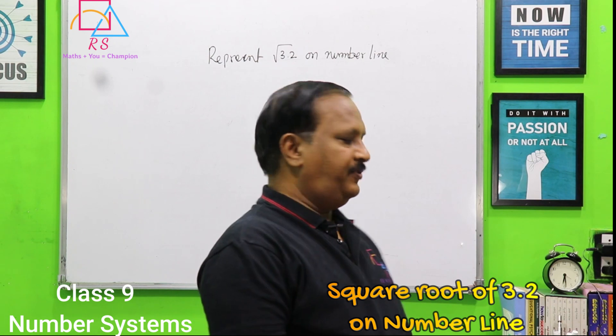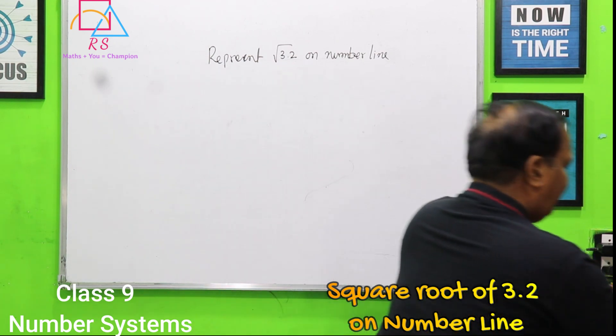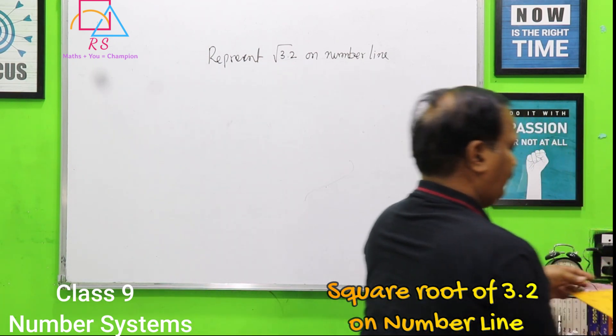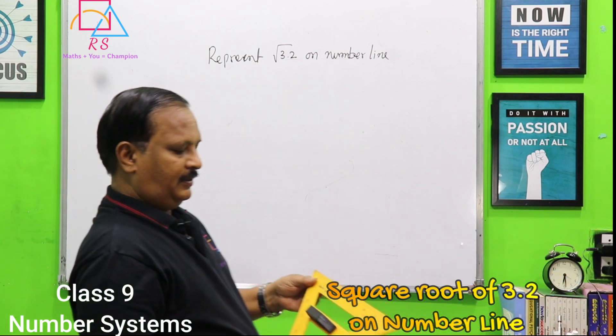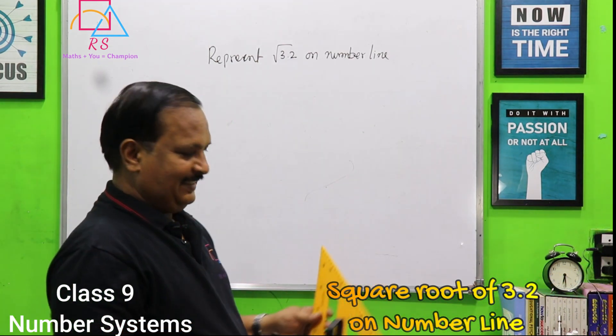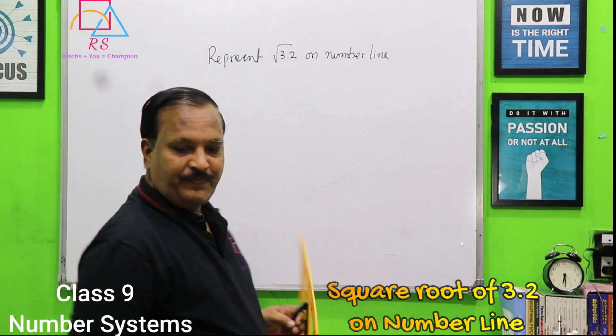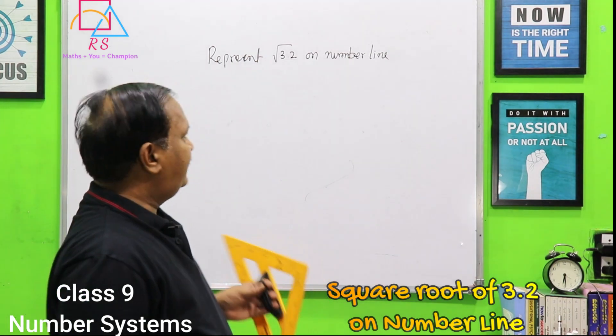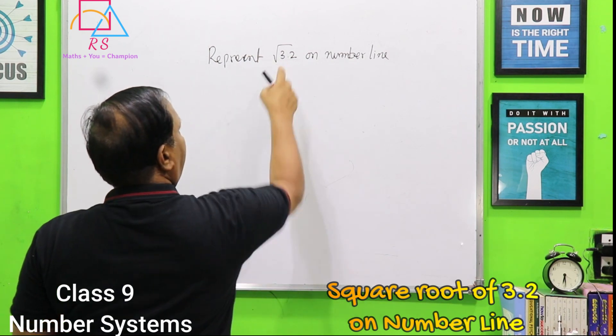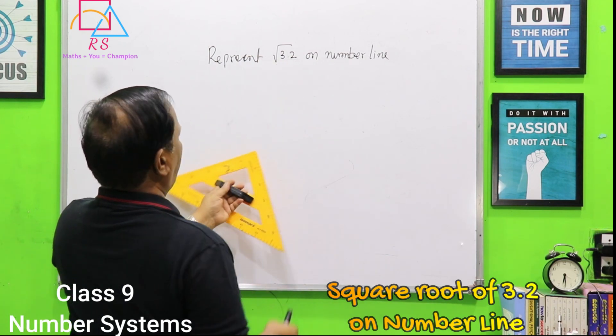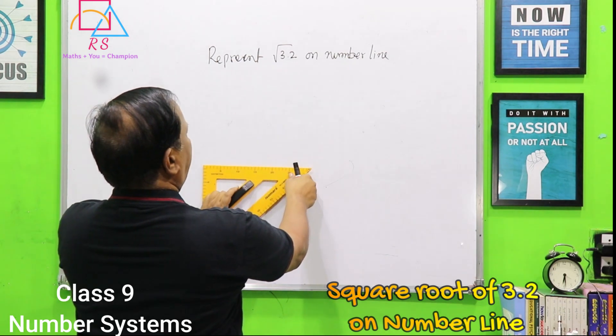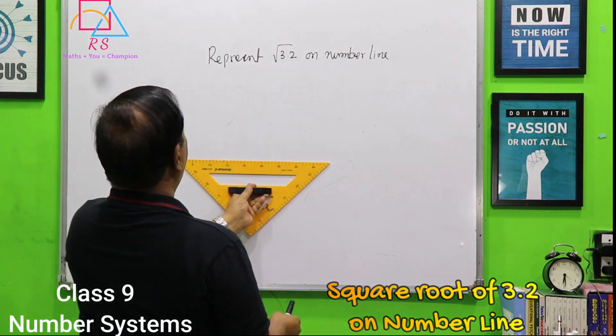For that, I will give you a procedure. I will take a scale. I use this one, it is easy to hold. First, I will draw 3.2.